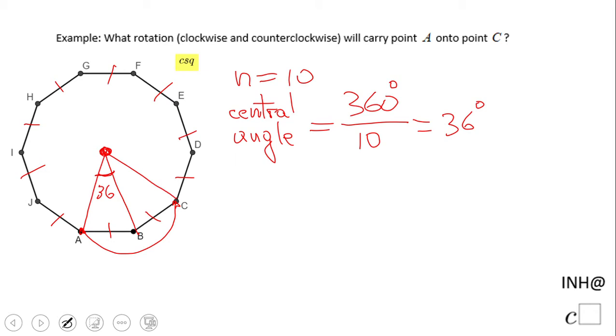So we have two times 36 degrees, and that will be 72 degrees. If we rotate counterclockwise 72 degrees, we get from A to C.